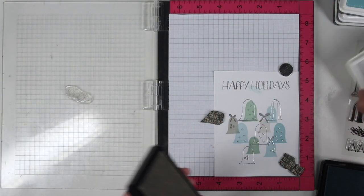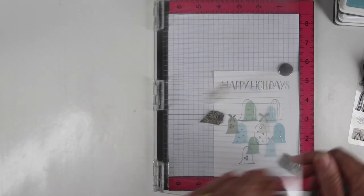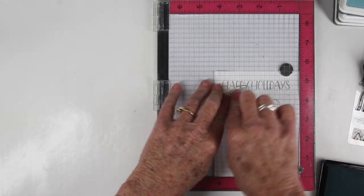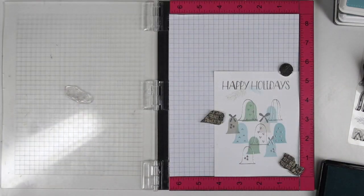I'm adding a few of the pine boughs just under the happy holidays and I'm using my fog ink, one blue and one green just to add a little bit of color to the top and you can stamp right over your embossing.